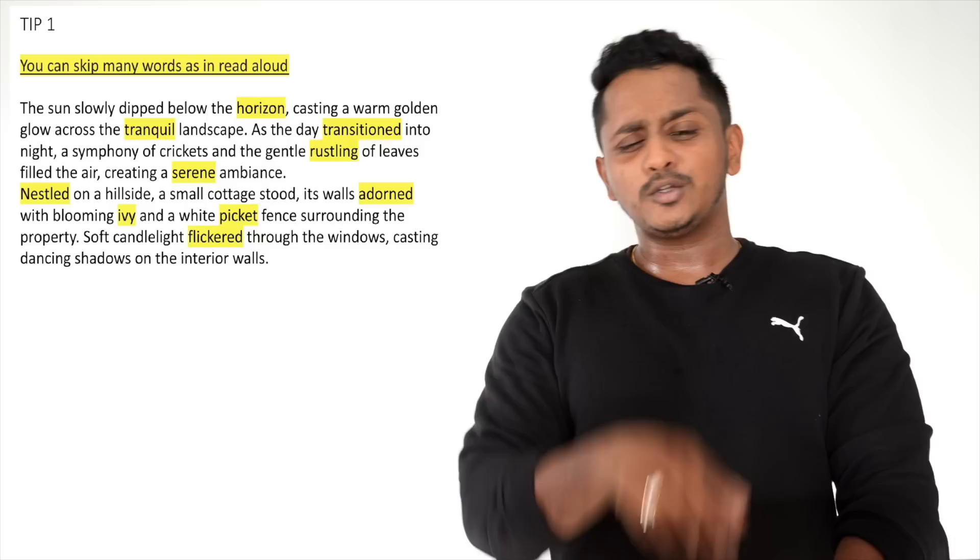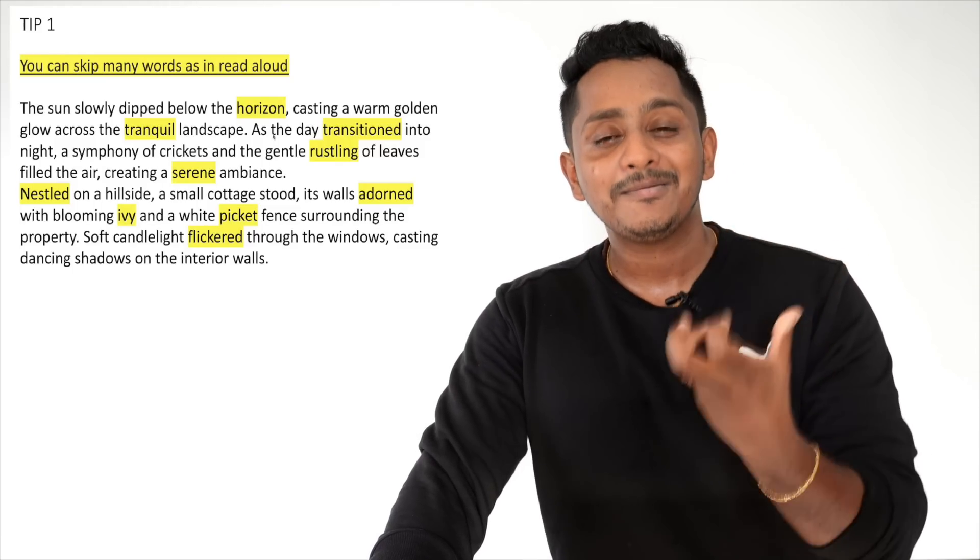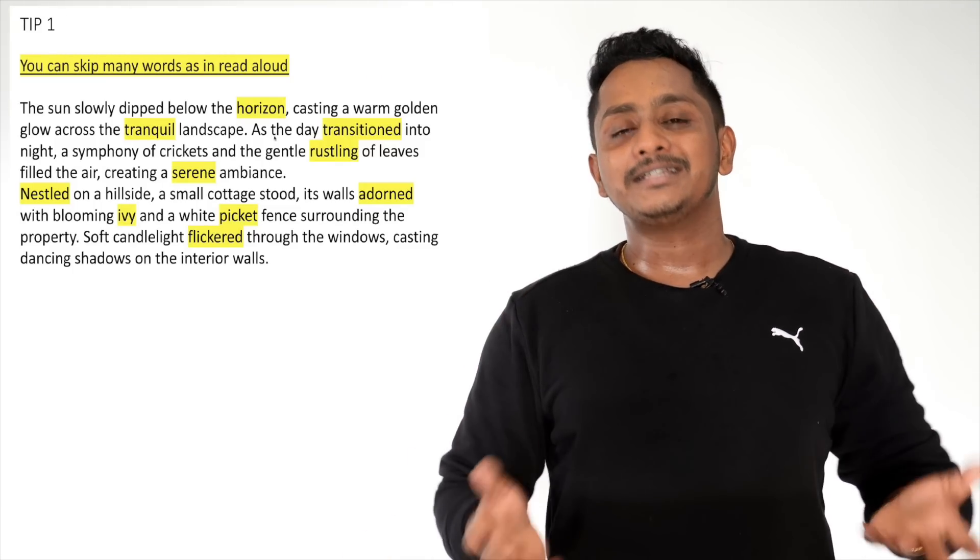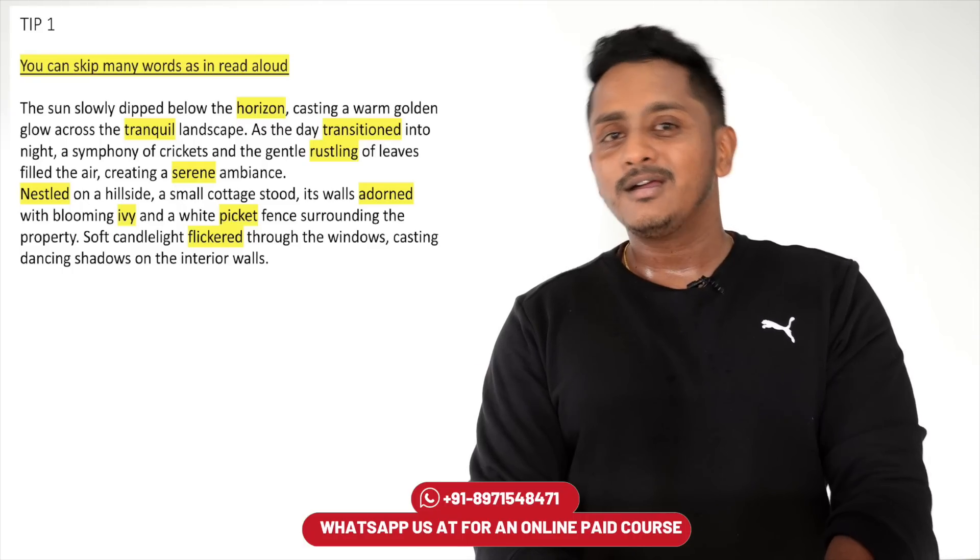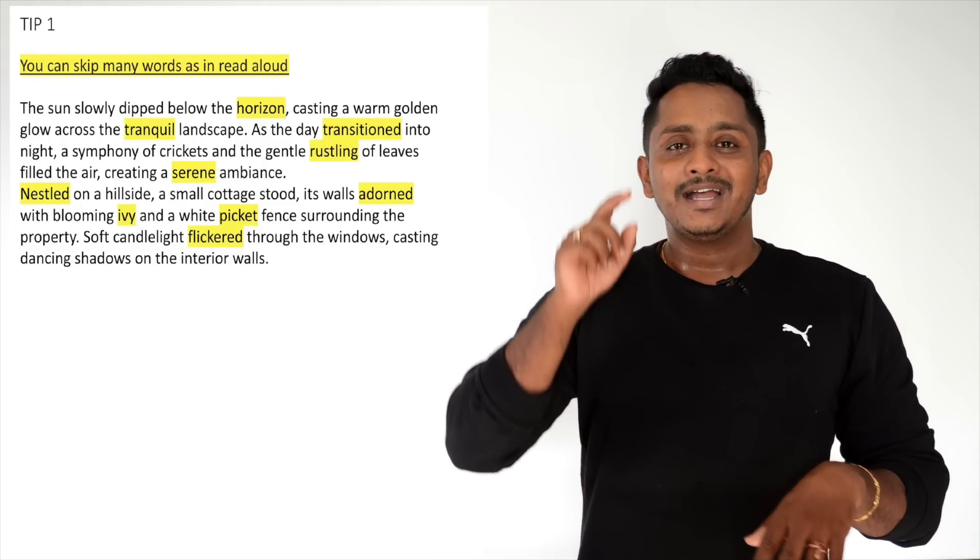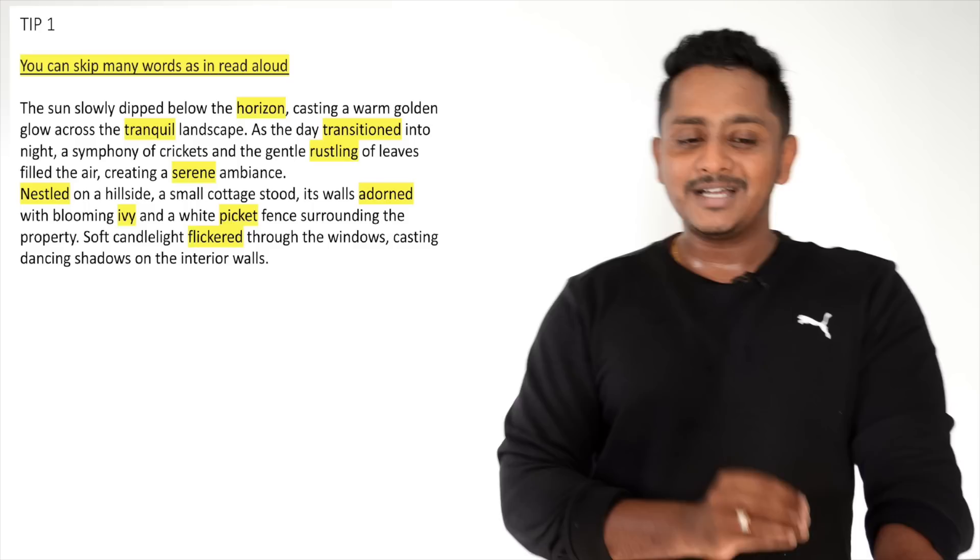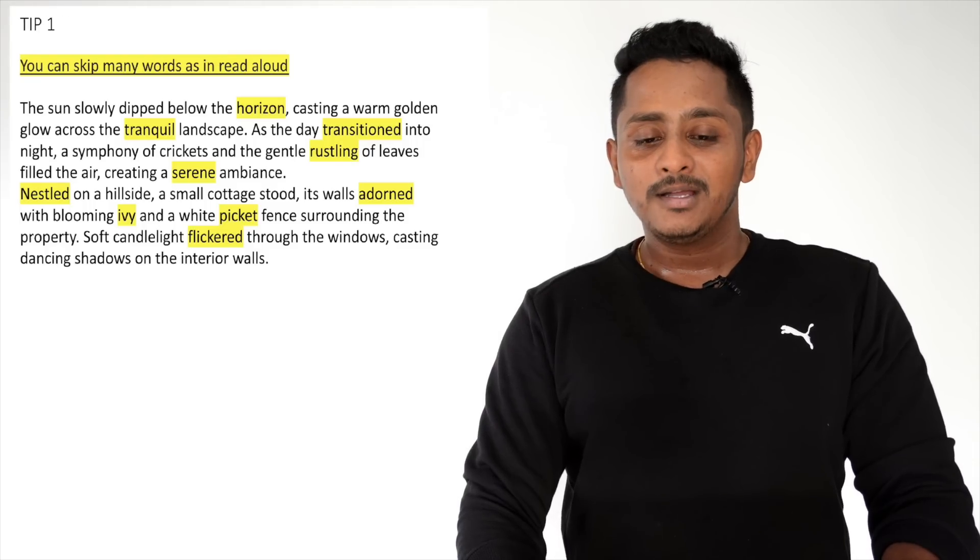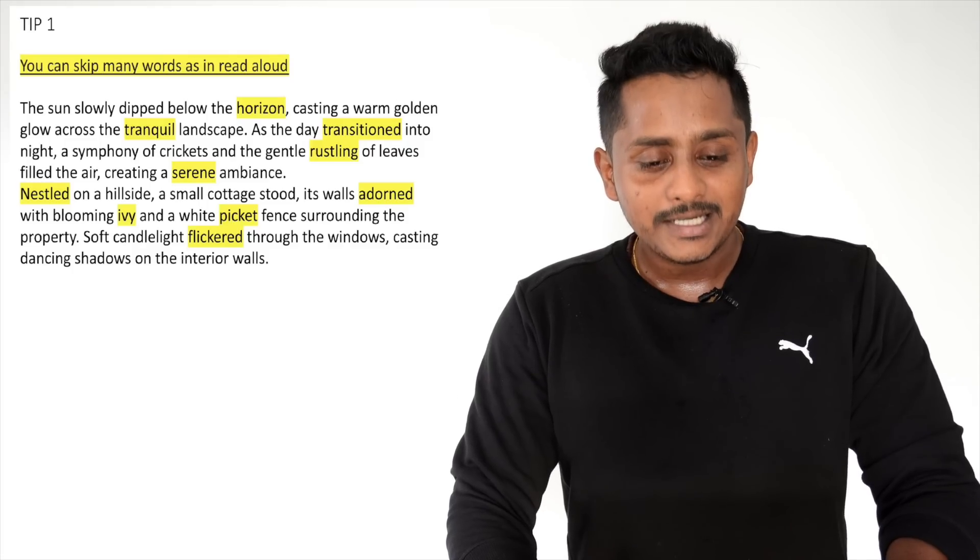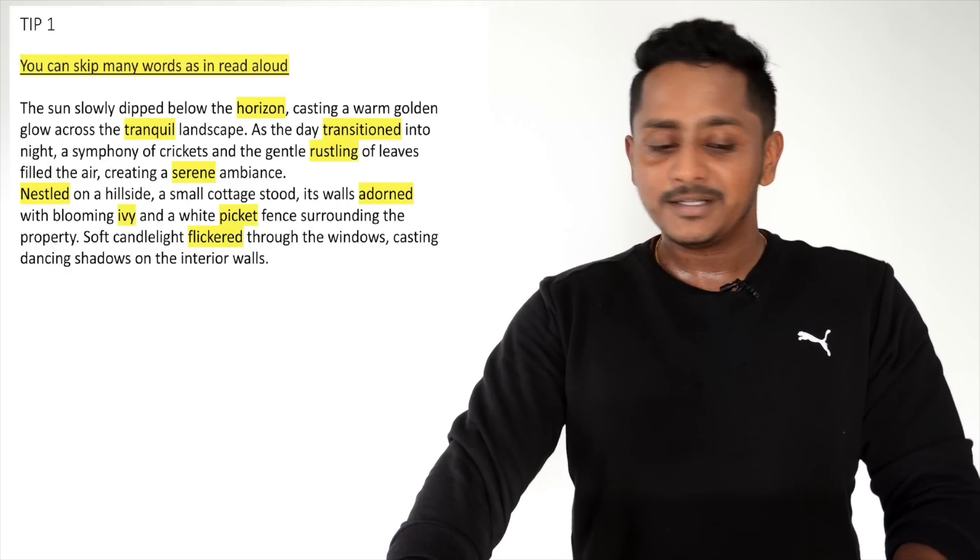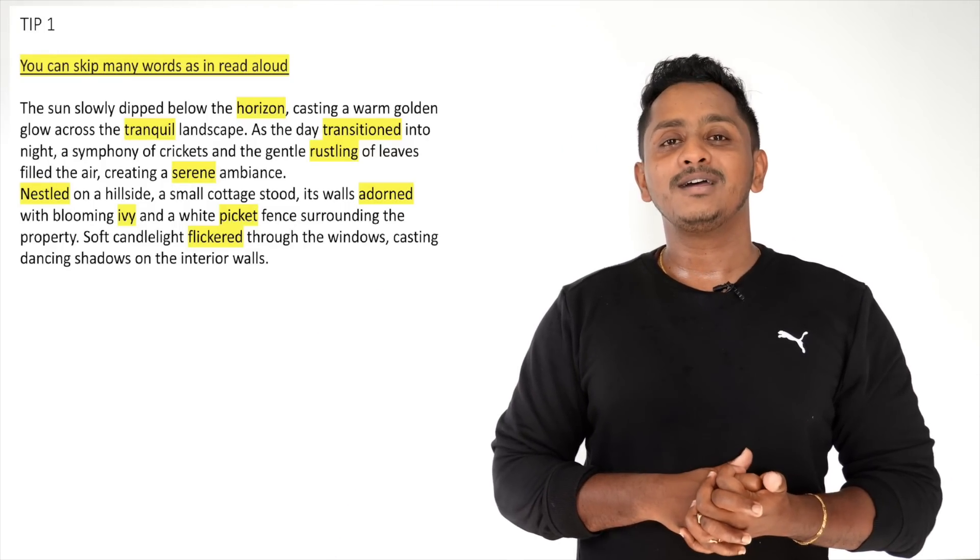Let's say this sentence in the Read Aloud and there are so many words which I don't know how to speak which I have highlighted. Let's say can I skip these words? Definitely yes. But when you skip, don't compromise on the fluency. And that's the secret tip. The sun slowly dipped below the horizon, casting a warm golden glow across the landscape. As the day transitioned into night, a symphony of crickets and the gentle rustling of leaves filled the air. That era is gone. Just skip it. Tell the software that you are fluent.